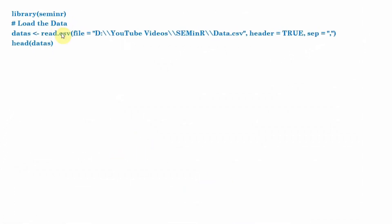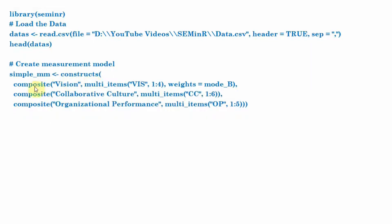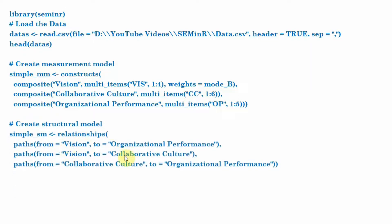Now, what's the code? We load our data, we specify our measurement model, and we create our structural model. Again, vision to organizational performance — that is your direct effect. Vision to collaborative culture — IV to mediator. And then collaborative culture to organizational performance — that is your mediator to your dependent variable. Just three paths as identified in the last slide.